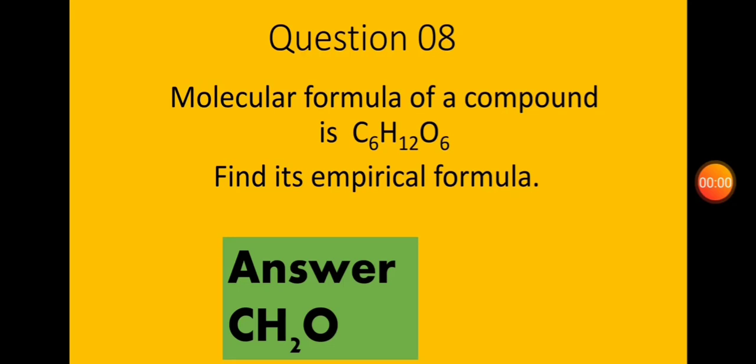Question number 8: the molecular formula of a compound is C₆H₁₂O₆ — find its empirical formula. It is simple: divide the molecular formula throughout by the common factor to get the empirical formula CH₂O.